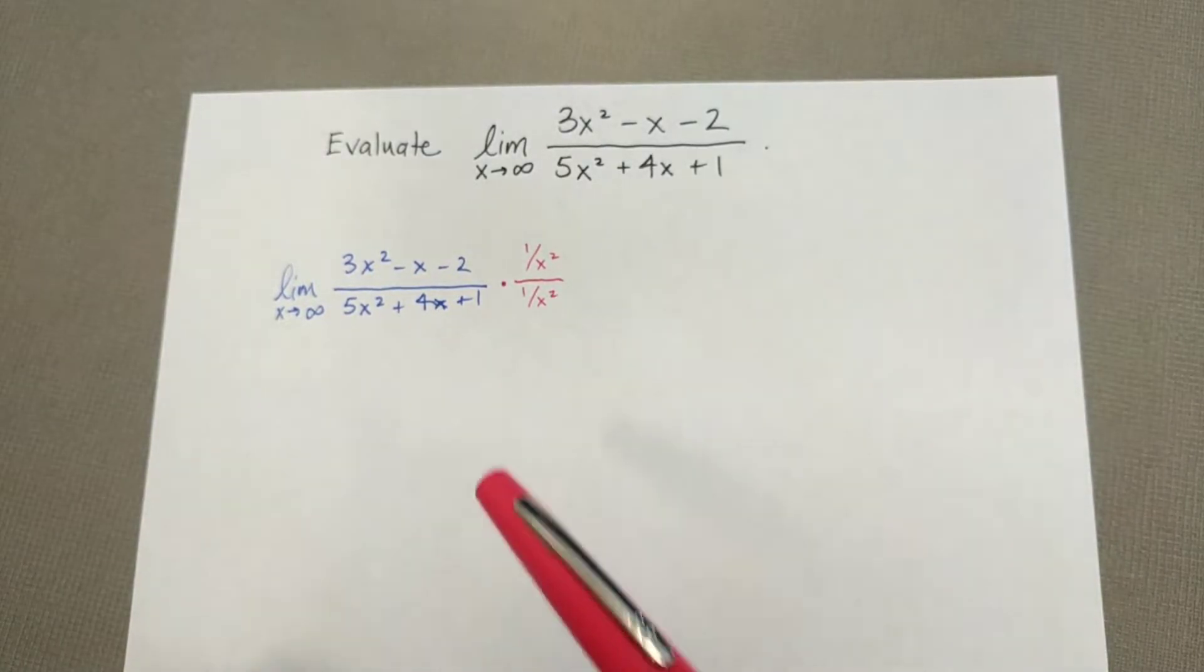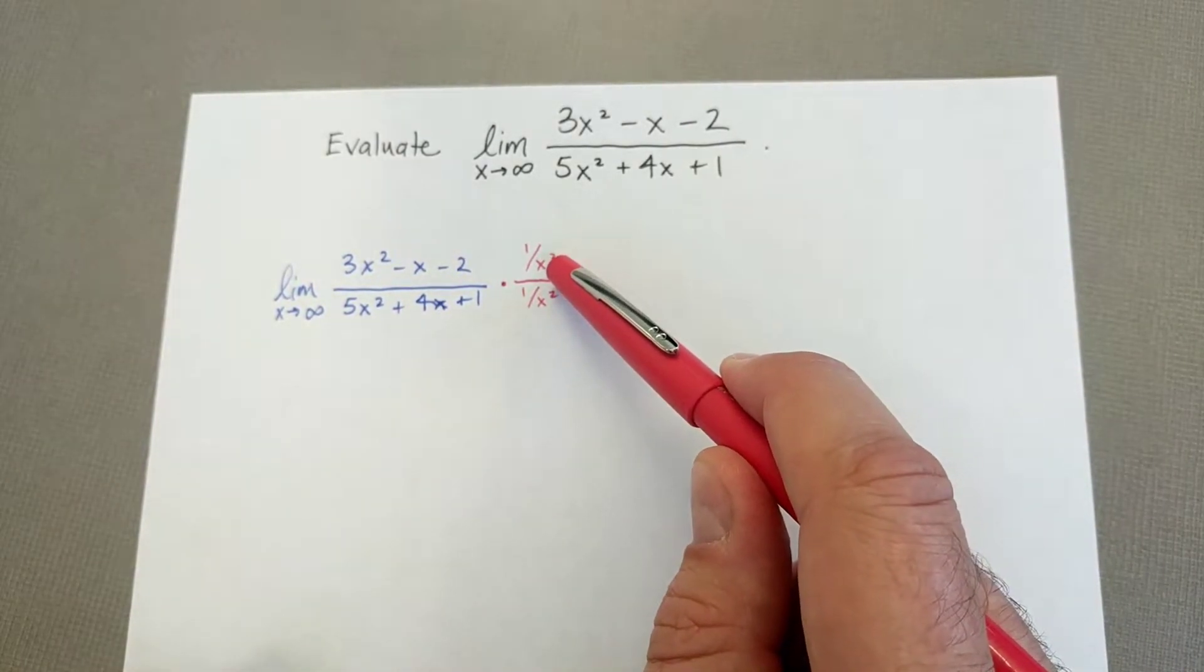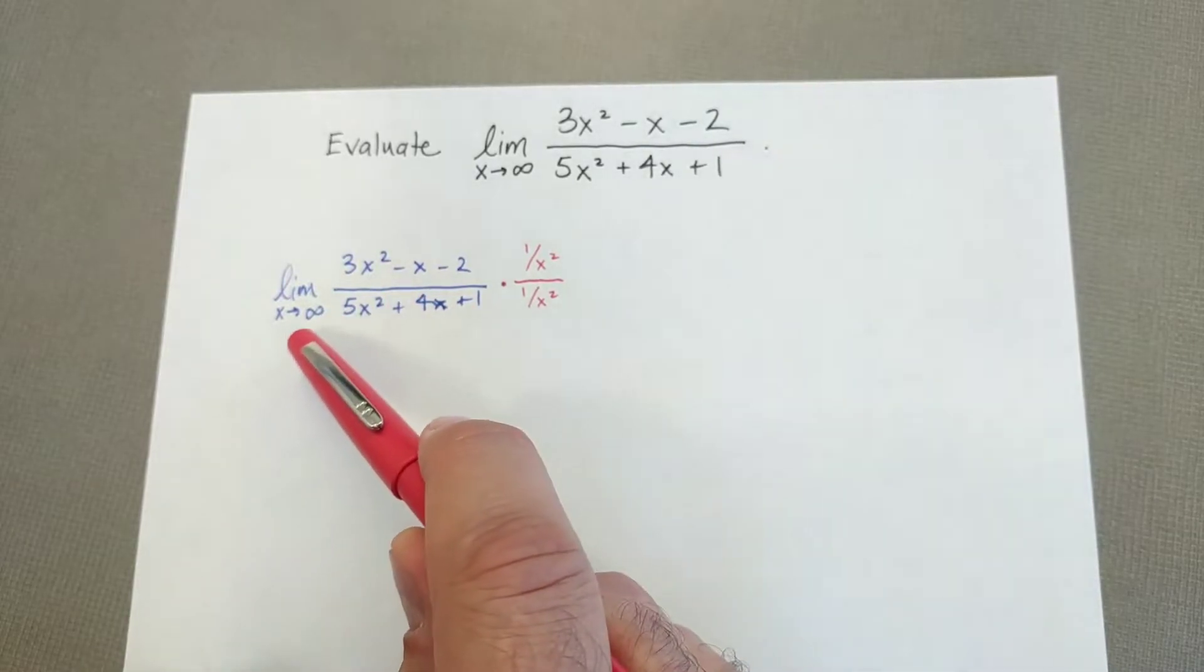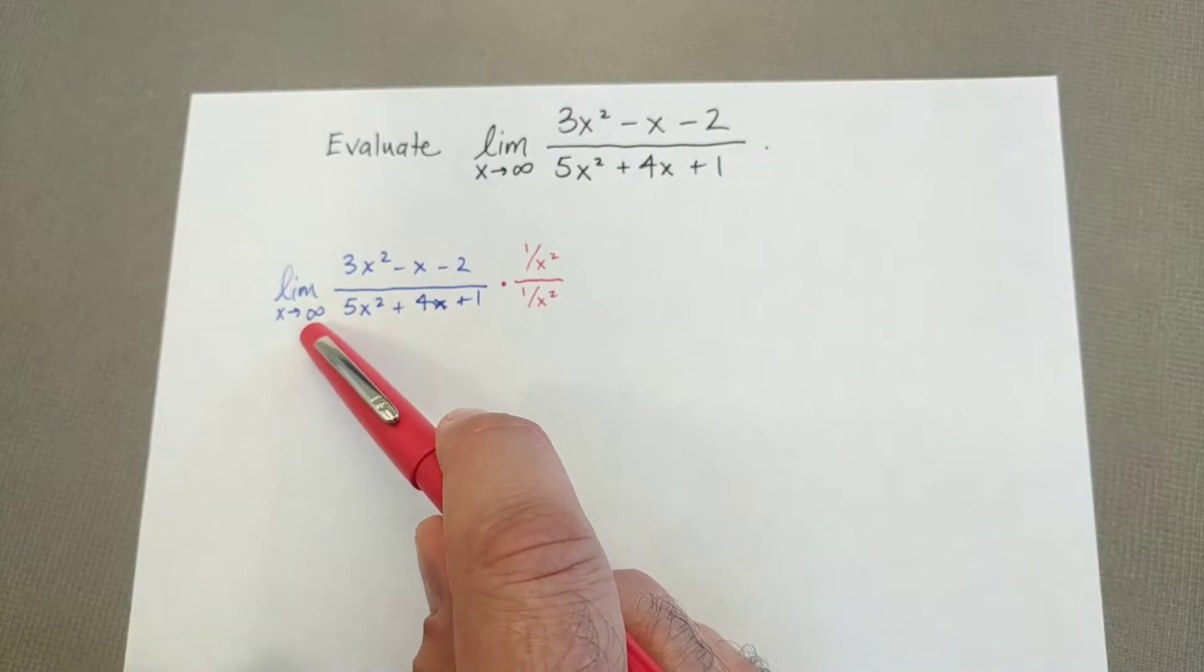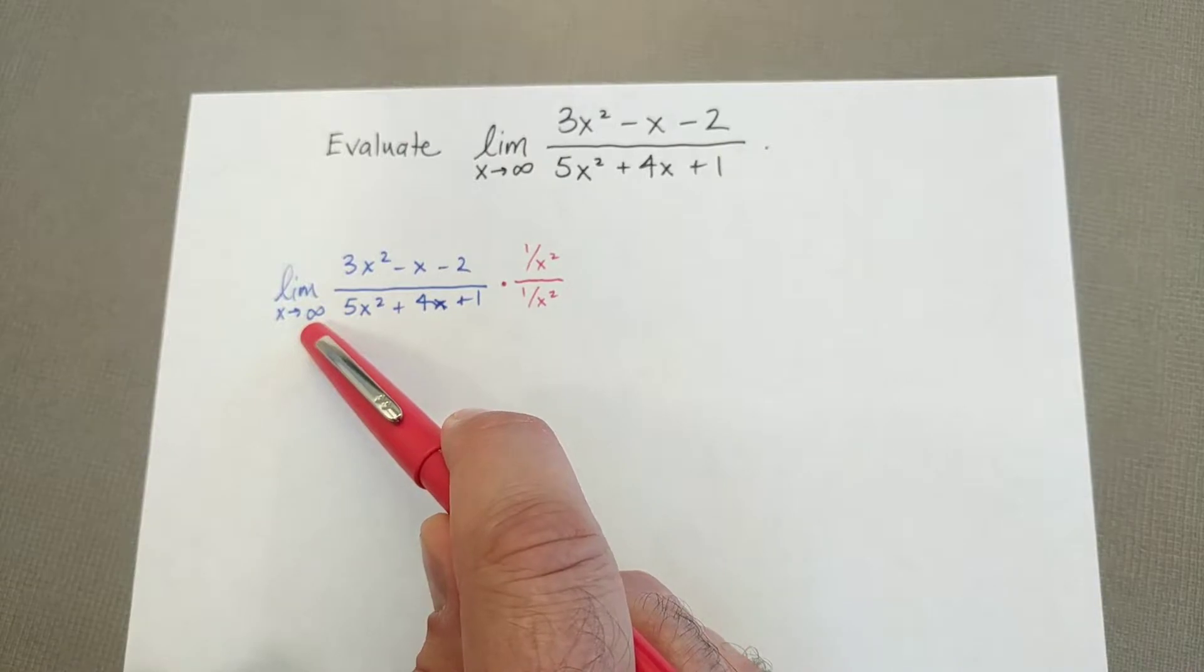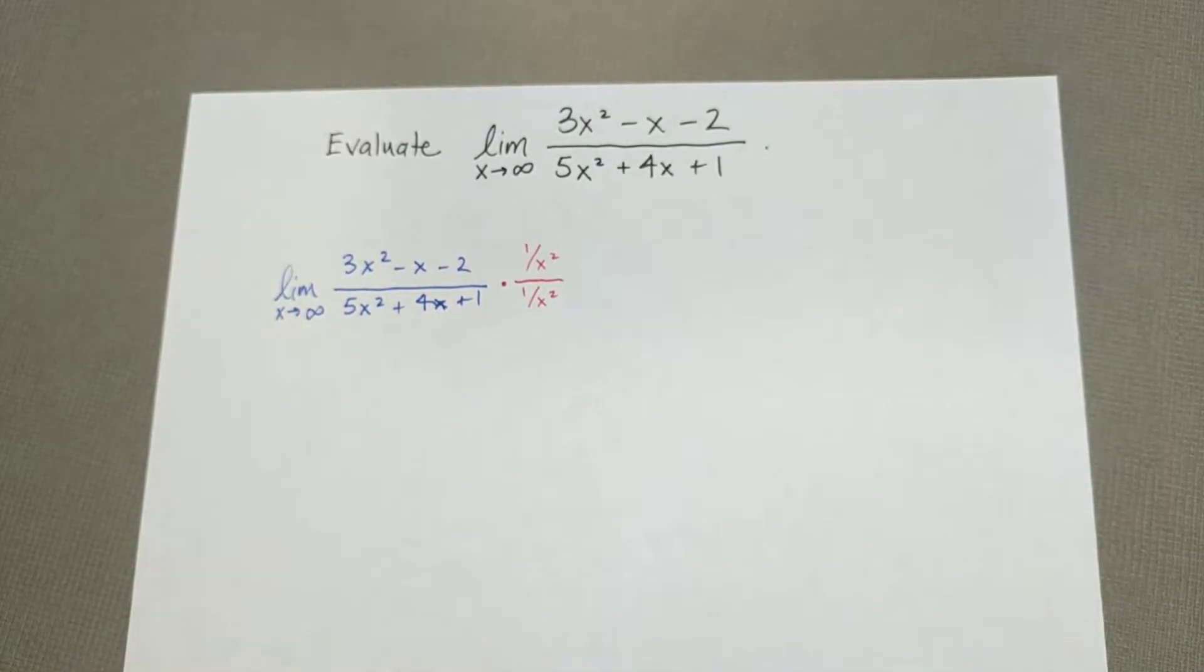But the reason I'm going to do this is it gives me an opportunity to see, well, what happens to the terms as x goes to infinity? And I can use my number sense after that to think about it. So let's go ahead and rewrite this a different way.